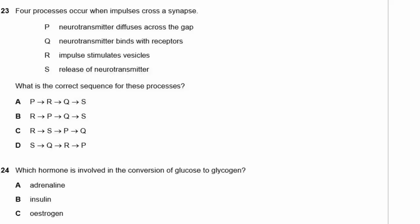Question 23: Four processes occur when impulses cross a synapse — neurotransmitter diffuses across the gap, neurotransmitter binds with receptors, impulse stimulates vesicles, and release of neurotransmitter. The correct sequence is: the impulse stimulates vesicles (R), vesicles release neurotransmitter (S), neurotransmitter diffuses across the gap (P), then binds with receptors (Q). The correct sequence is R, S, P, Q — that's C.